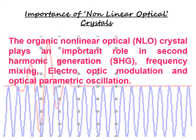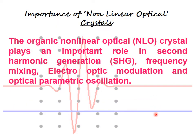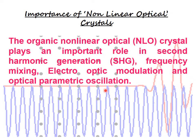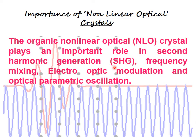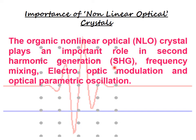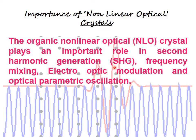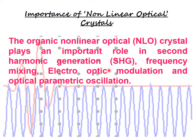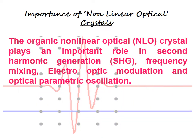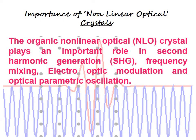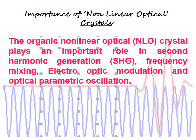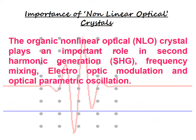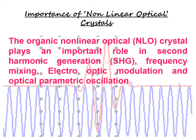Importance of non-linear optical crystals: The organic non-linear optical crystal plays an important role in second harmonic generation, frequency mixing, electro-optic modulation, and optical parametric oscillation. Second harmonic generation, also called frequency doubling, is a non-linear optical process where two photons with the same frequency interact with a non-linear material, combine, and generate a new photon with twice the energy — thus twice the frequency and half the wavelength.